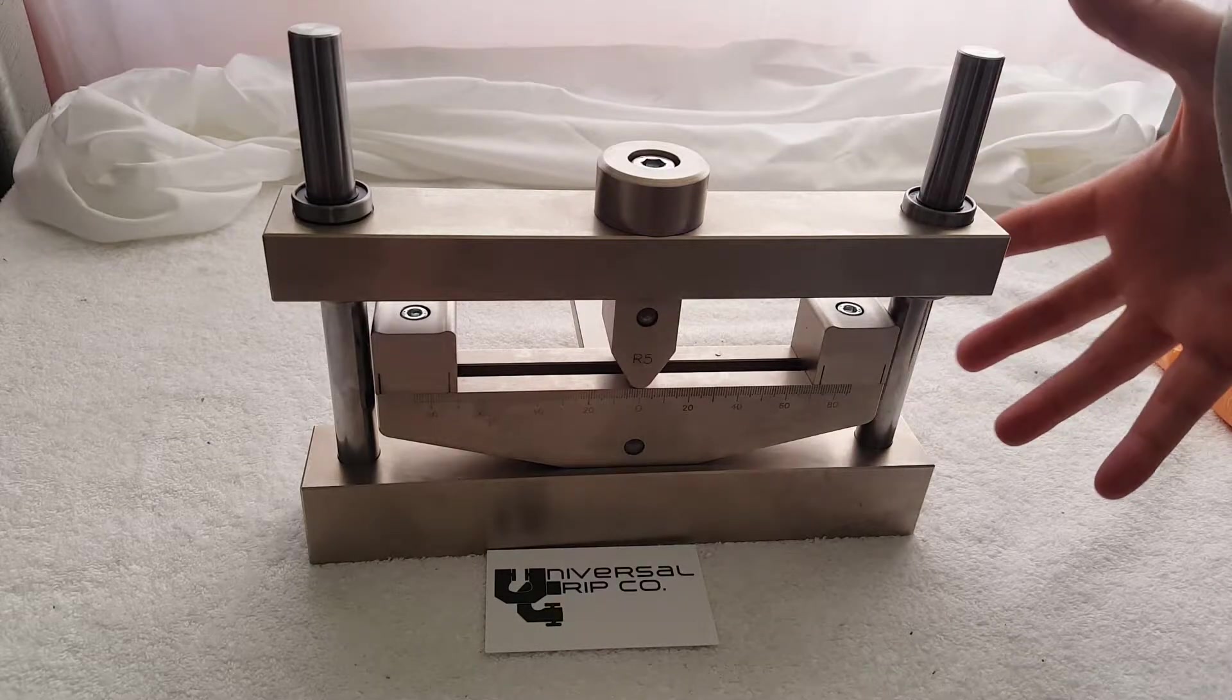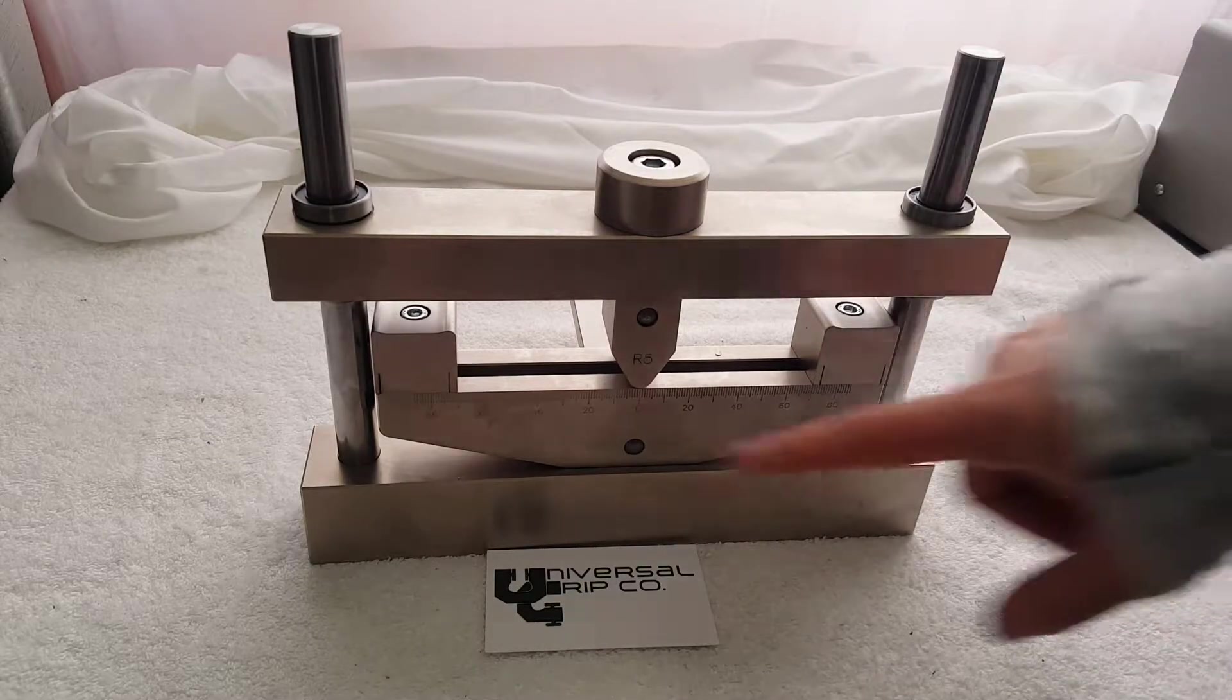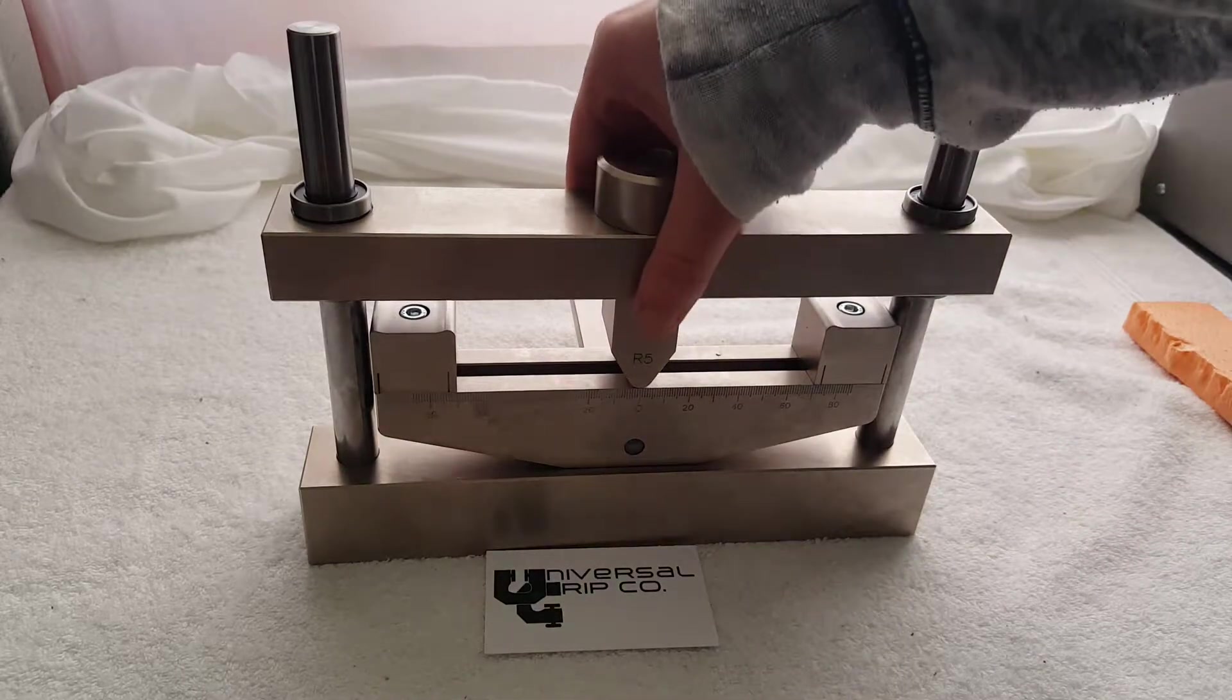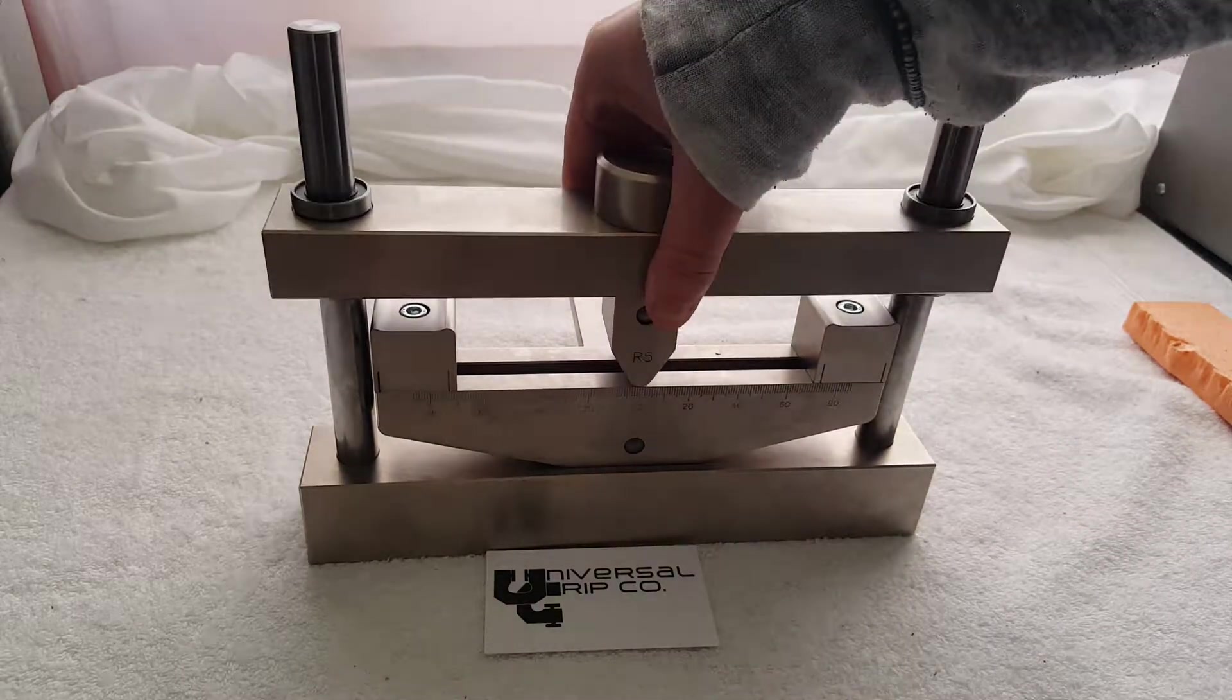So this is a guided test fixture which means that there's two columns on the side here that run up and down. So this helps with more even loading.